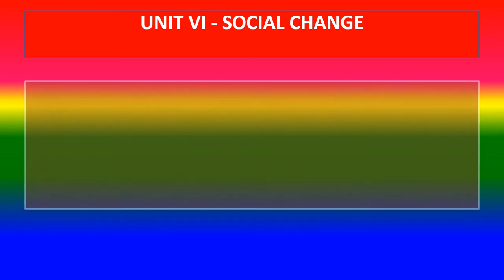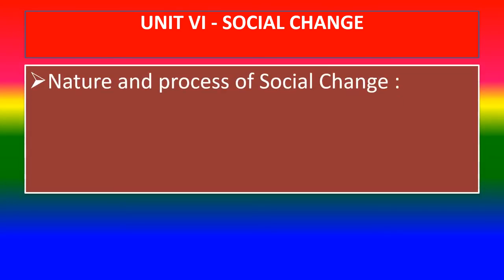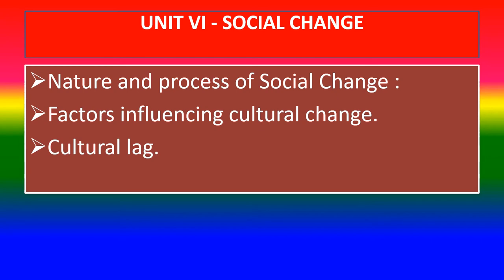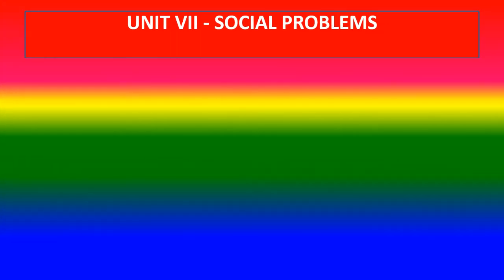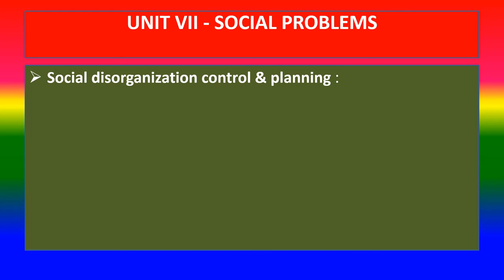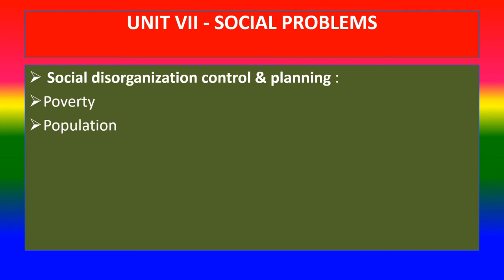Unit 6 - Social change: Nature and process of social change. Factors influencing cultural change. Cultural lag. Unit 7 - Social problems: Social disorganization, control and planning, poverty, and population.